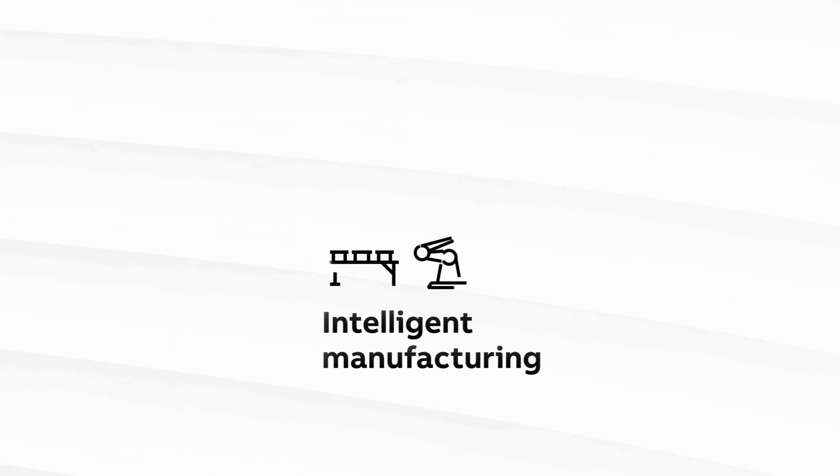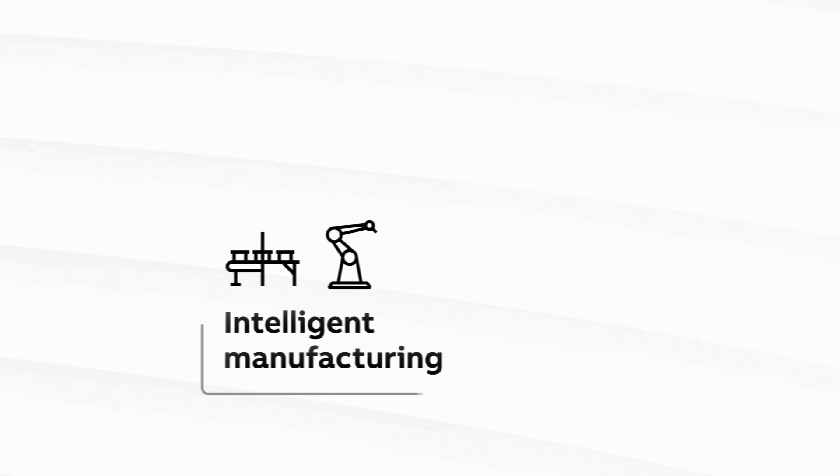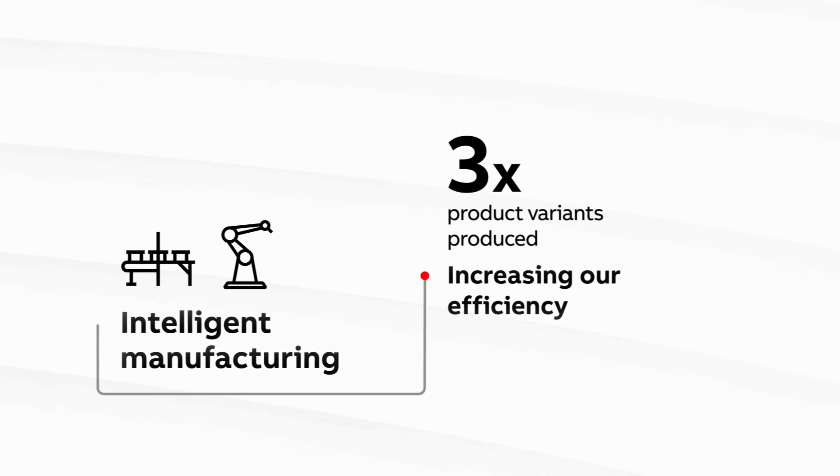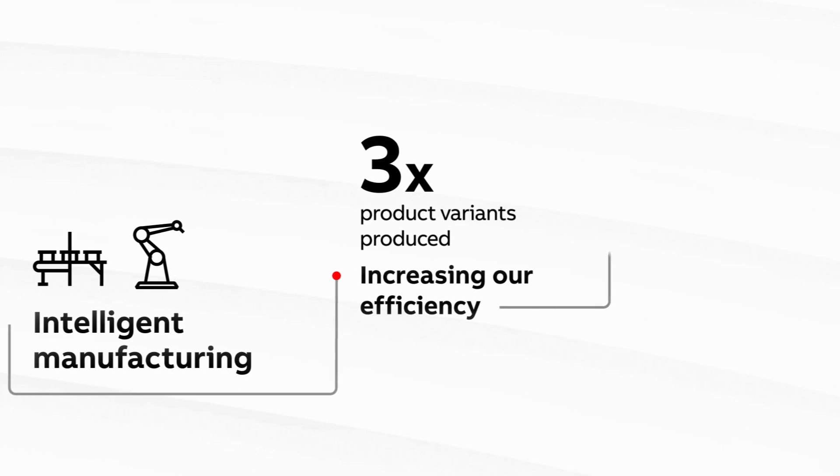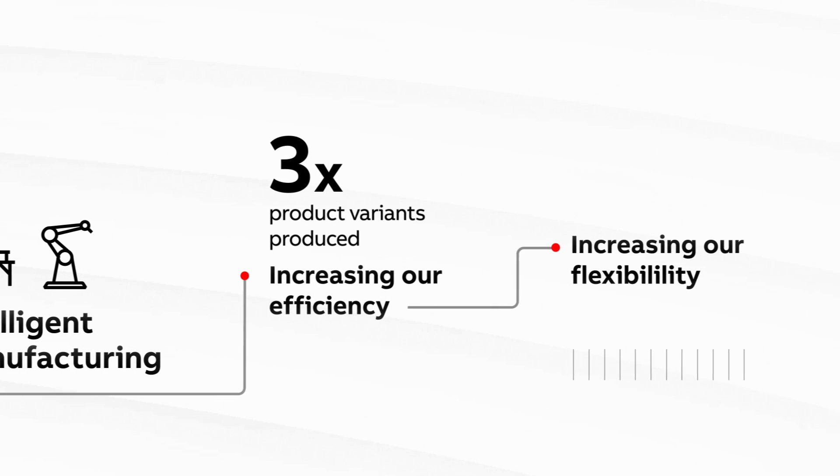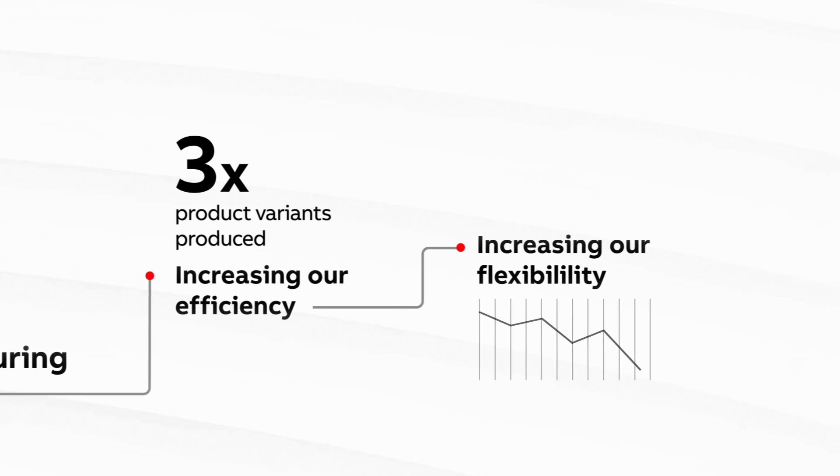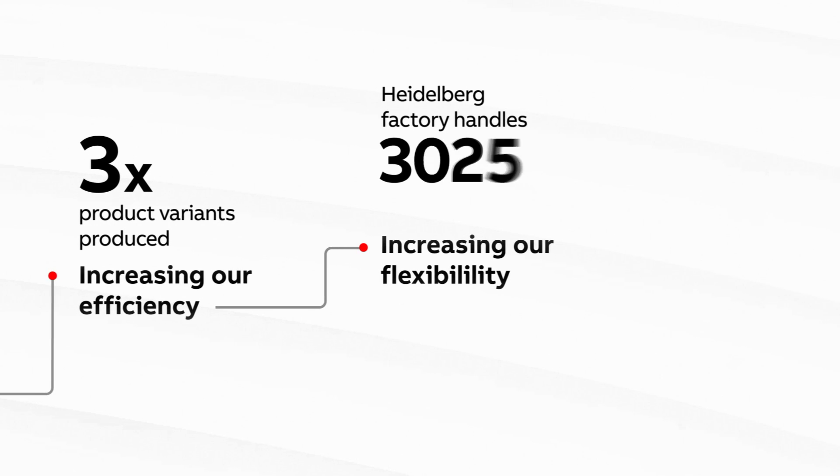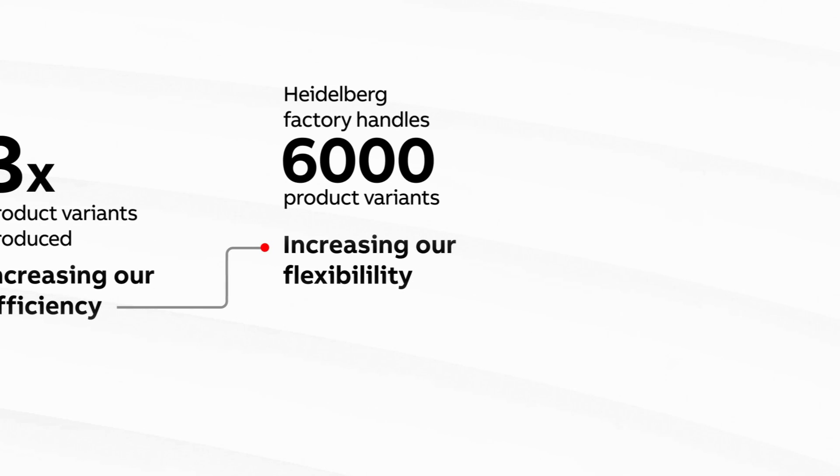Intelligent manufacturing has revolutionized our production process, increasing our efficiency so that three times as many product variants can be produced. Increasing our flexibility so that batch sizes can be smaller and more varied. The Heidelberg factory alone can handle 6,000 product variants.